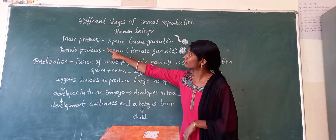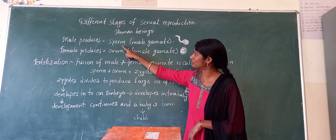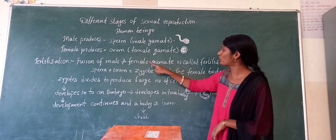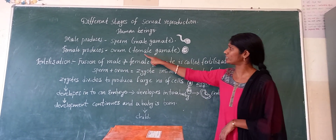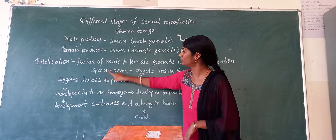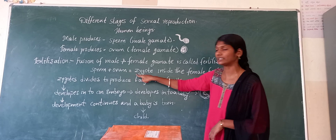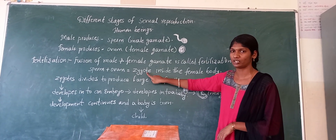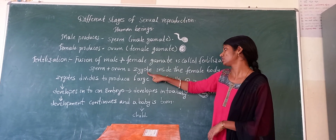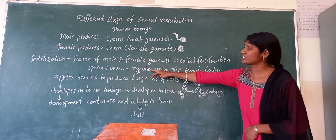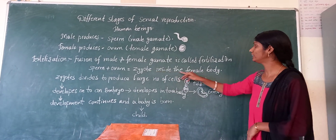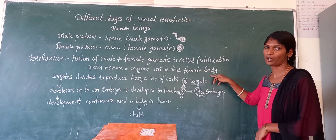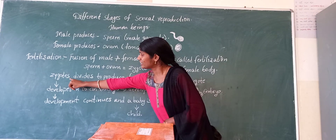The male gamete is producing sperm and the female gamete is producing ovum. So sperm and ovum together — what is it going to be? It is going to be a zygote. So where is this zygote going to form? In the female's body.